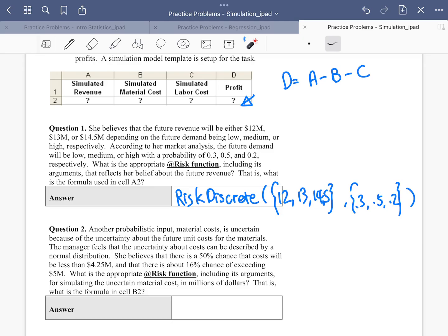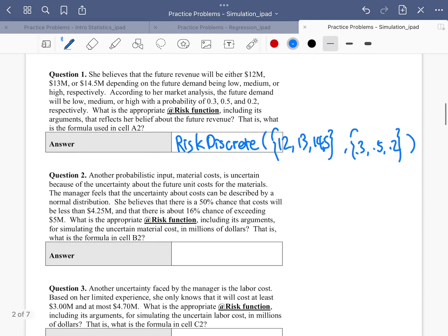And there's a 16% chance that it's going to exceed $5 million. How do we simulate material cost using at-risk function? So first thing we learned is we know it follows a bell curve normal distribution. So we're going to draw a bell curve here.